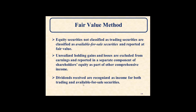Equity securities not classified as trading securities are classified as available for sale, and are also reported at fair value. The difference is that unrealized holding gains and losses are excluded from earnings and reported in a separate component of shareholders' equity as part of other comprehensive income. So if it's a trading security, gains and losses are reported in earnings; if it's available for sale, they are reported in other comprehensive income. Dividends received are recognized as income for both trading securities and available for sale securities.